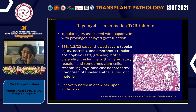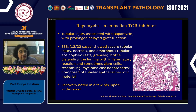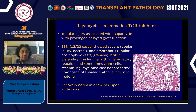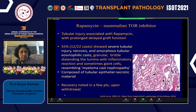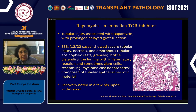Rapamycin also rarely produces another toxic reaction in the kidney, reported by the Seattle group many years ago, which resembles a cast myeloma-like picture with necrotic eosinophilic casts obstructing the tubules. This is quite rare, and some patients have recovered after the medication was removed.